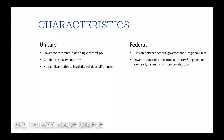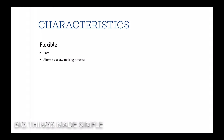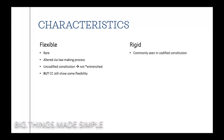A flexible constitution is rare and can be altered by a lawmaking process with a simple majority. This is another feature of the UK constitution. Due to its uncodified nature where rights are not entrenched, it allows more flexibility. It is important to note that some codified constitutions still show some flexibility — for example, the US Supreme Court has the ability to interpret the constitution. A rigid constitution is one where the procedure for an amendment is deliberately made difficult. However, it should be noted that some uncodified constitutions have been resistant to change, like the British constitution, where the principle of parliamentary sovereignty can be dated back to the 17th century.